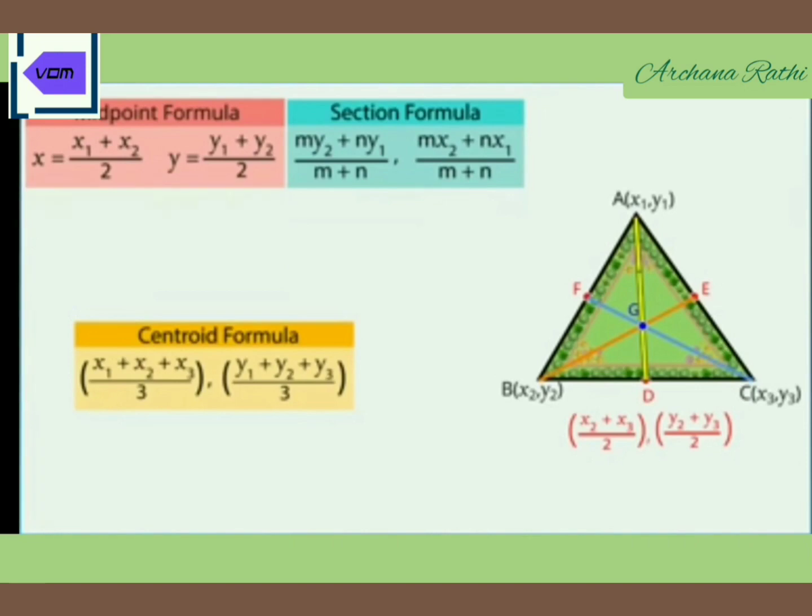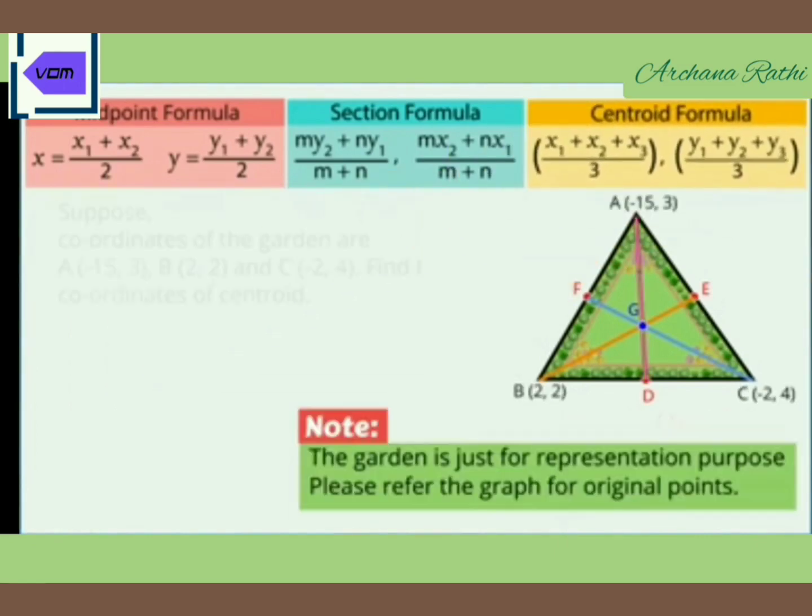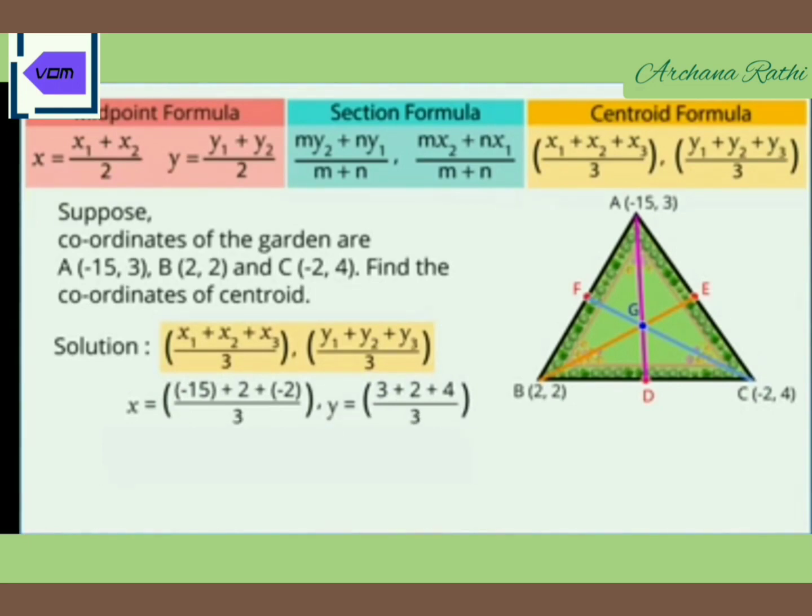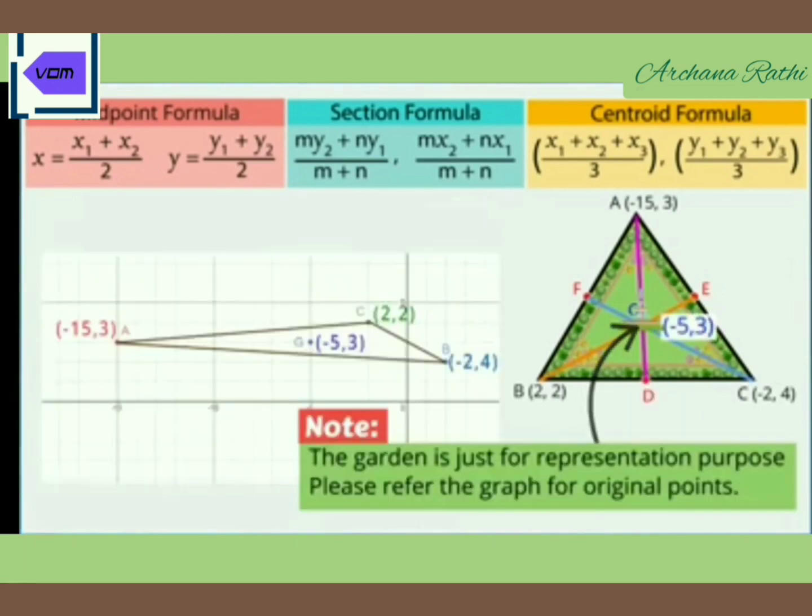Now let us take one example. Find the coordinates of the centroid given the coordinates. As the coordinates are given, put these values in the centroid formula. Add all x coordinates and divide by 3, and add all y coordinates and divide by 3. After solving, you will get x = -5 and y = 3. These are the coordinates of the centroid G: (-5, 3). This is how you can directly find the centroid by using the section formula and midpoint formula.